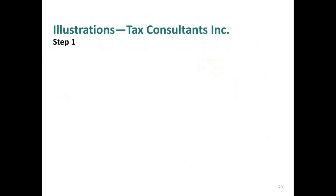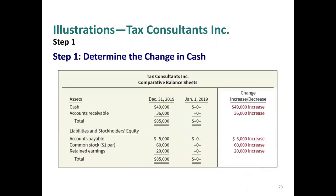Step one: compute the change in cash. We already accomplished this — there was an increase in cash of $49,000. We're going to do all this work to explain why cash increased by $49,000.